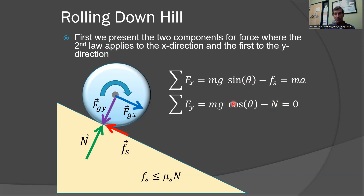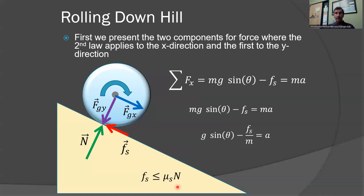N is placed in the equation where μ times N equals fs, the maximum static friction value — though in some cases we don't need all of that force, so it's less than or equal to μs times N. Looking at the general acceleration: normally, if I'm just sliding down the hill, my acceleration would equal g sine theta. But if we cause the wheel to rotate, it interacts with the surface through fs, the static friction, and we have to account for how that affects the mass. This is tricky because we need to connect this to the rotational inertia of the wheel.